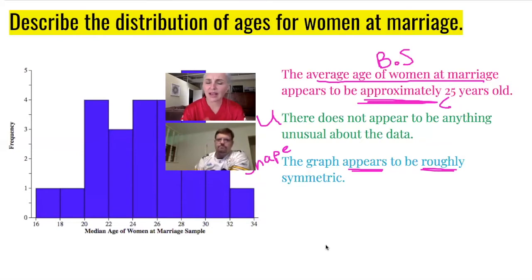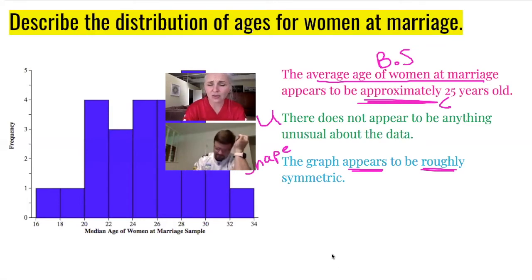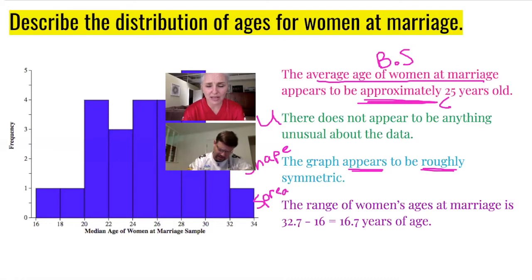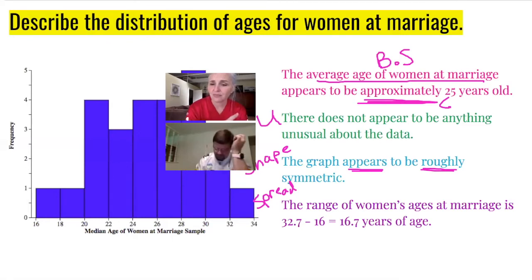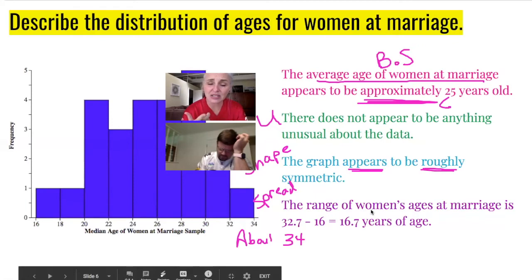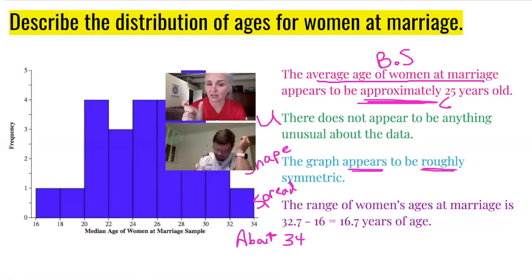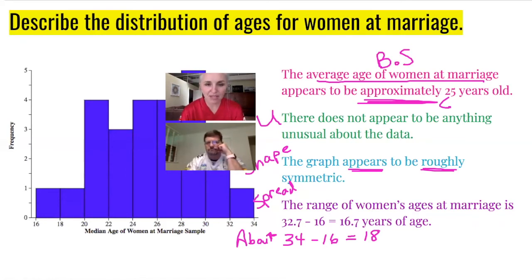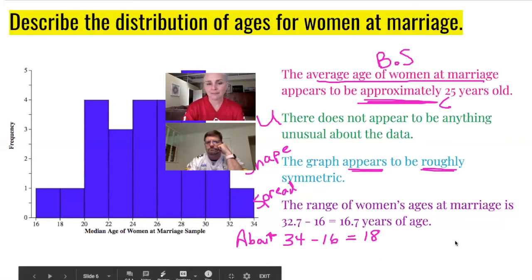The last letter is S for spread. The spread we know is the range. The range of women's ages at marriage is 32.7 minus 16, which is 16.7 years of age. If you use the minimum and maximum from the intervals you see on the graph, say 34 minus 16, you would say it's about 18 years of age using a wishy-washy word, and that's fine.